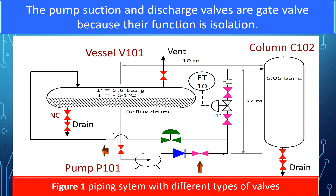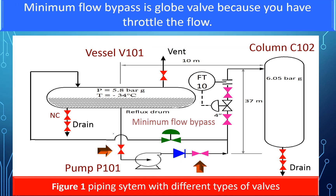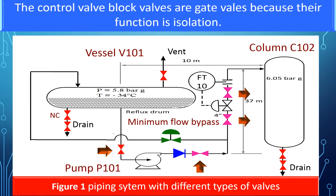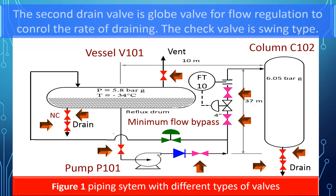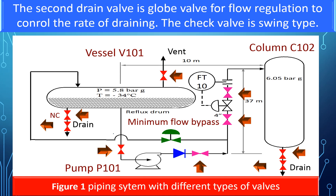The pump suction and discharge valves are gate valves because their function is isolation. The minimum flow bypass valve is a globe valve because you have to throttle the flow. The control valve block valves are gate valves because their function is isolation. Vent valves are gate valves because they are usually on or off. The first drain valve is a gate valve for isolation. The second drain valve is a globe valve for flow regulation to control the rate of draining. The check valve in the pump discharge is a swing type.